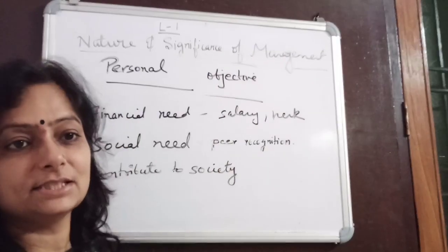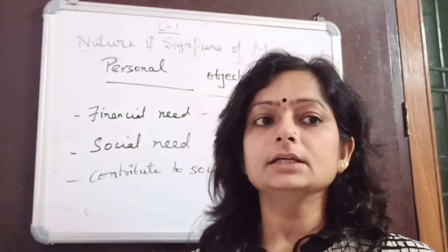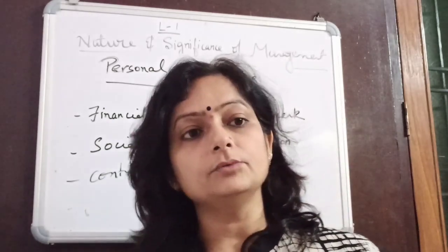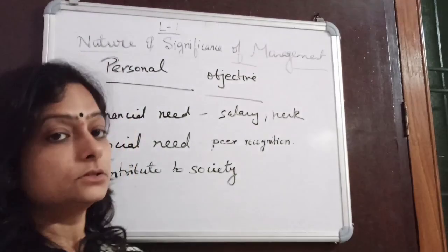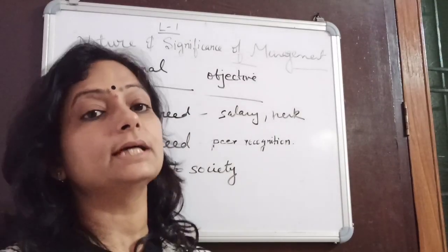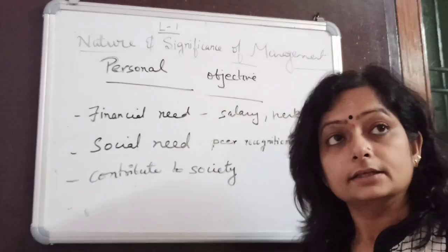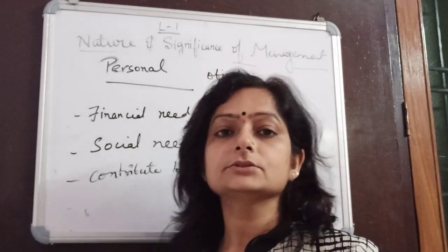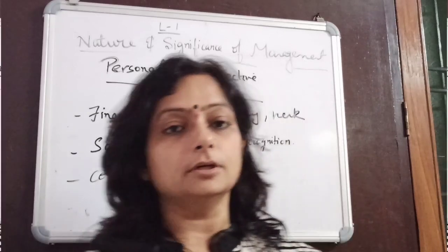Now let's look at individual objectives. As each individual is different — all come from different backgrounds with different hopes and aspirations — different people have different needs. Some work for financial needs and want a good salary, some have social needs like peer recognition, and some want to contribute to society. This covers all the objectives of a business.